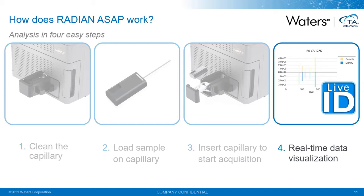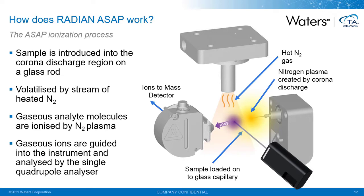That's the basic workflow of analysis using Radian ASAP. The source geometry should be very familiar to those with prior knowledge of mass spec techniques. The sample is introduced into the source on a disposable glass capillary from the front of the instrument. A stream of heated nitrogen gas serves two purposes: it provides heat to the glass capillary to volatilize the sample, and it creates a nitrogen plasma in the region around the corona discharge pin, which is the basis of the predominant ionization mechanism. The nitrogen plasma indirectly creates ions from volatilized molecules, which are guided into the instrument and sorted by mass-to-charge ratio before being detected to generate the mass spectrum.